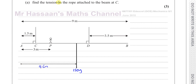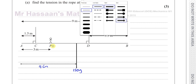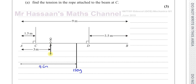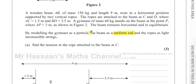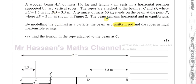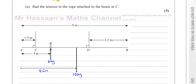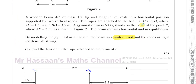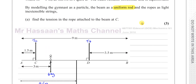Then you have the weight of the gymnast. The gymnast has a mass of 60 kilograms, so a weight of 60g newtons, and that's 3 metres from A — that's already marked. And of course you've got the tensions in the ropes: tension at C (Tc) and tension at D (Td). So that's everything we need to know — this system is in equilibrium.